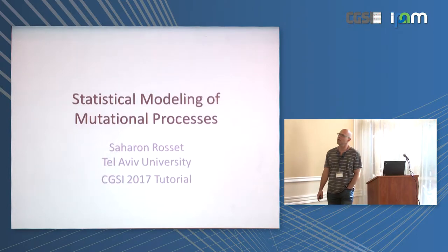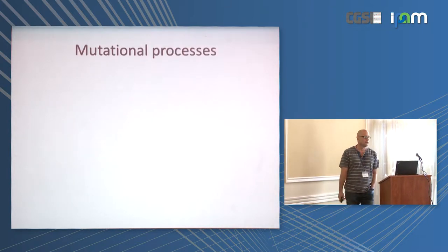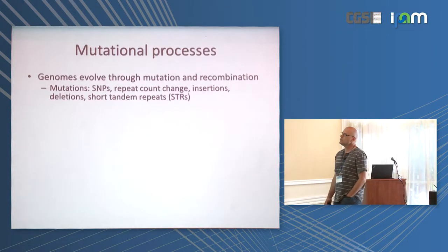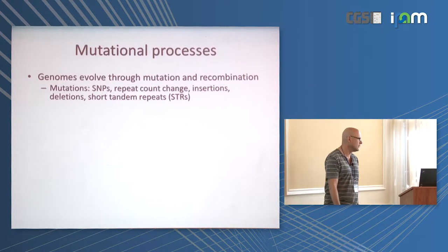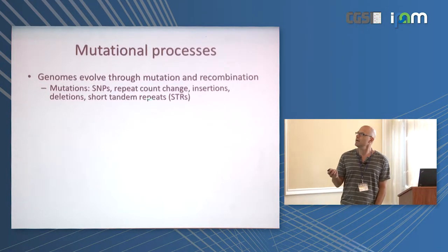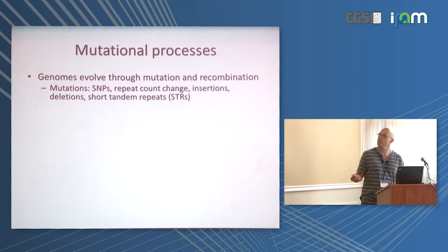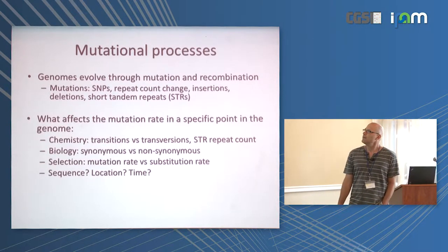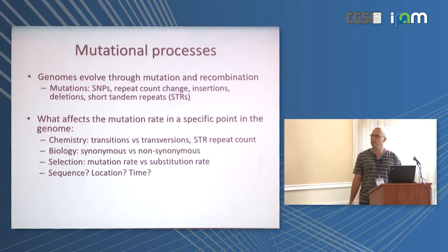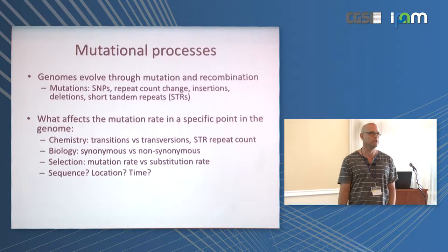My tutorial is actually going to be about statistical modeling of mutational processes. When we think about mutational processes, we all know that genomes evolve in different ways, and one of the main ones is through mutations. Mutations can include all the things we know about: SNPs, repeat counts, insertions, deletions, and short random repeats, among many other things. The question we are going to ask is what things affect the mutation rate in the genome in general and at a specific point in particular.